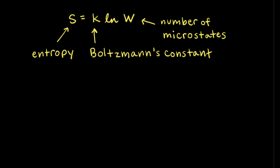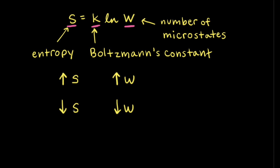Now that we understand the concept of microstates, let's look at an equation developed by Boltzmann that relates entropy to the number of microstates. According to this equation, entropy — symbolized by S — is equal to Boltzmann's constant k times the natural log of W, where W represents the number of microstates in a system. So if the number of microstates increases, that represents an increase in entropy, and if the number of microstates decreases, that represents a decrease in the entropy of the system.